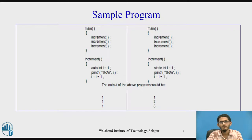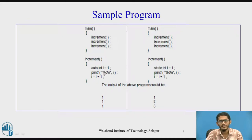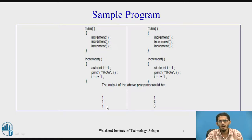Here is a sample program. On the left a variable i is declared to be of the storage class auto, whereas on the right the variable i has been declared with the storage class static. In both cases the increment function has been called three times from the main function. In the auto case, we print the value of i and then increment it. The first call displays value one, but next time when the increment function is called again, the value of i is still one — and the same is the case with the third call. The incremented value does not get stored.